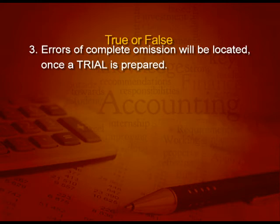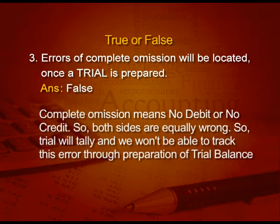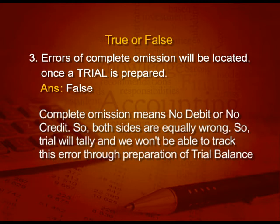Coming to our next point: error of complete omission — it will be located once a trial balance is prepared. The answer is false, because complete omission means no debit and no credit. So how can you get it from the trial balance? Both sides are equally wrong — debit is wrong, credit is wrong — and we would not be able to track this error through preparation of the trial balance.